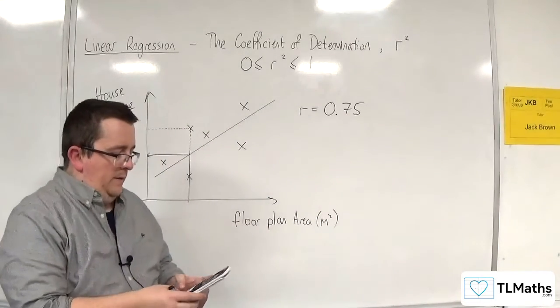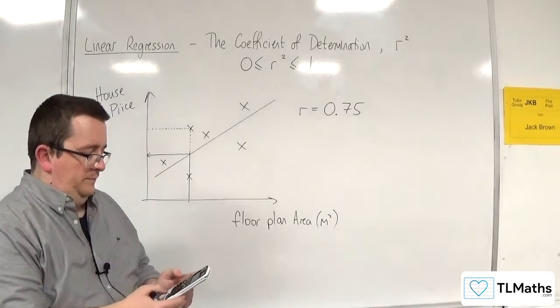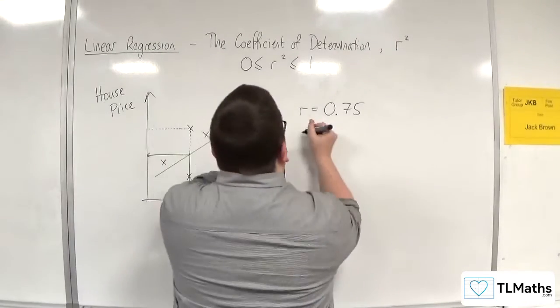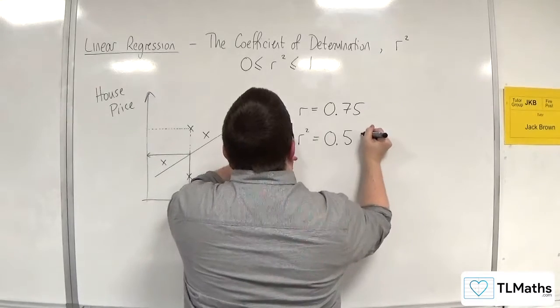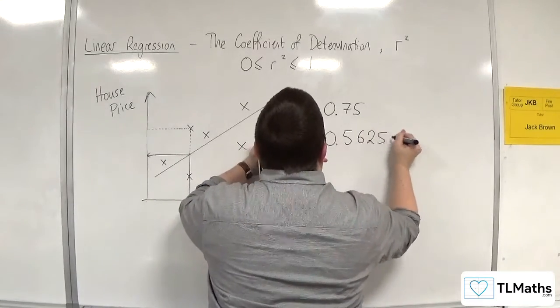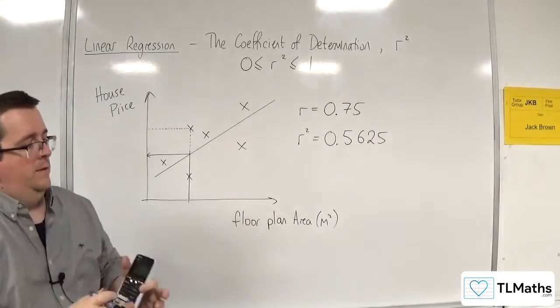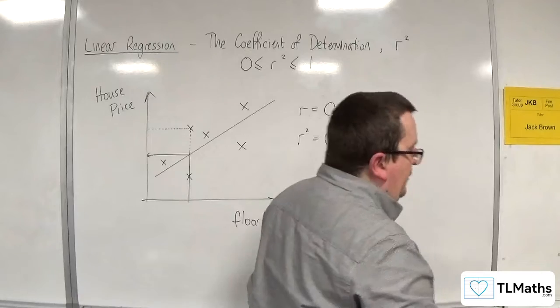When I square 0.75, so r squared, the coefficient of determination would be 0.5625. Now what's that saying?